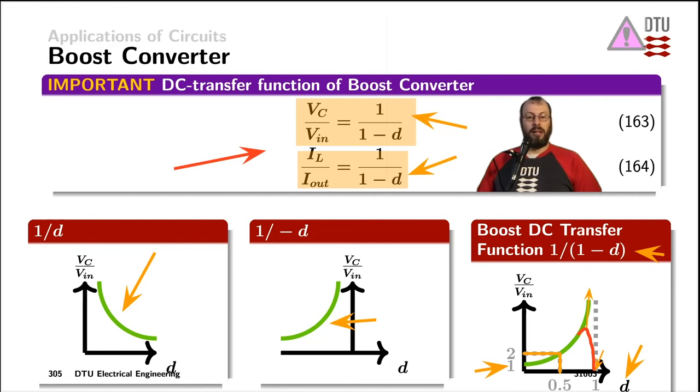We can understand that in a way that the inductor has no time anymore to release the energy of its magnetic field to the capacitor if we reach a duty cycle of 100% because the inductor capacitor would only be in parallel to the input voltage source but never be connected to the output. Therefore, the capacitor at the output side would discharge through the load and the output voltage would drop to zero.